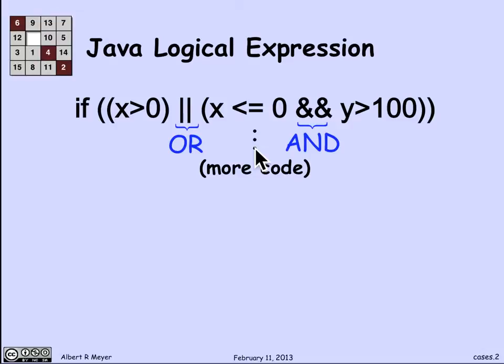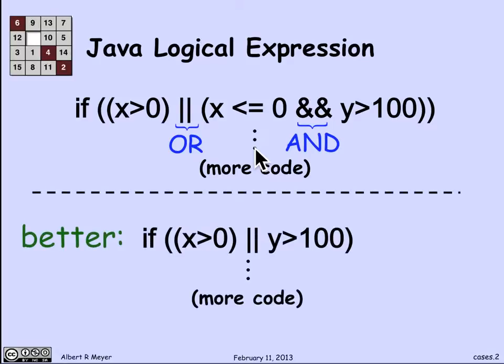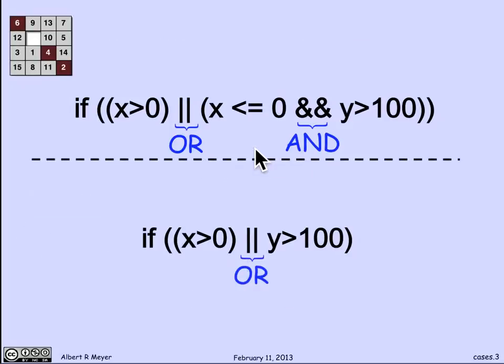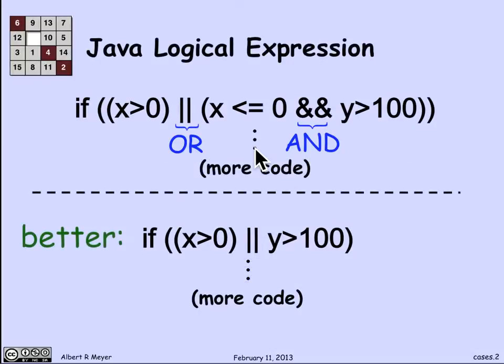Now what I claim is that this code can be improved if it's rewritten in the following way: if x is greater than 0 or y is greater than 100. So the claim is that these two hunks of code, if I just replace this test, which has three components that require an extra step to evaluate in some cases, by this code,